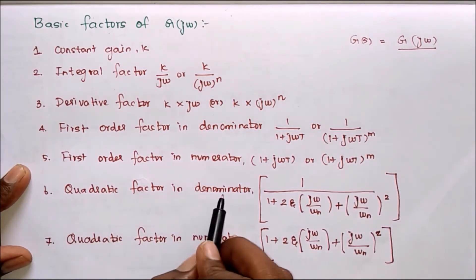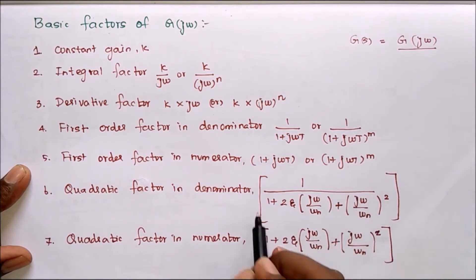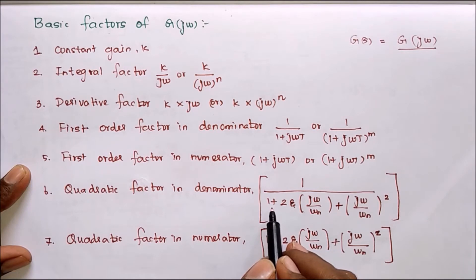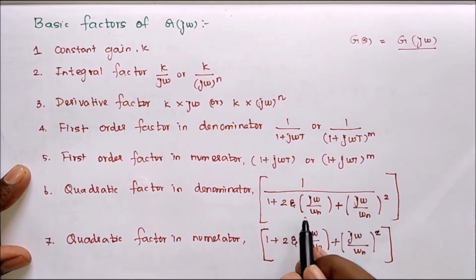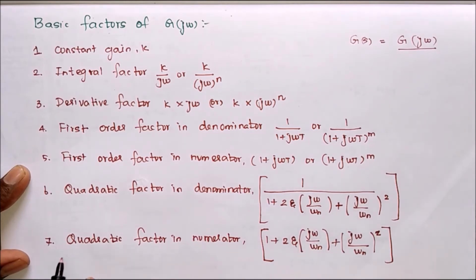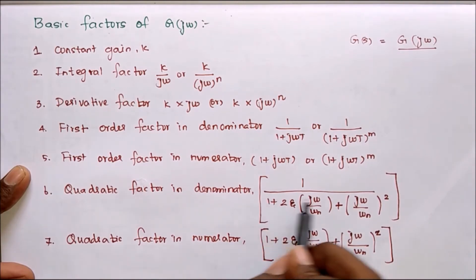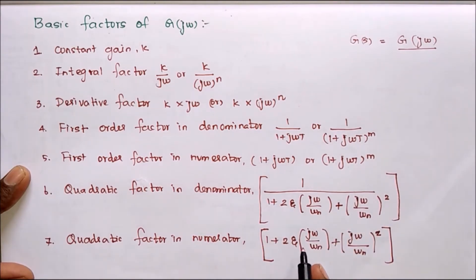Next quadratic factor in the denominator. This is a quadratic equation. We have to rearrange and construct like this: 1 plus this term, 1 plus S term plus S square term. Likewise we have to modify and apply while moving for Bode plot. Next quadratic factor in numerator. This is in the denominator, it is in the numerator.